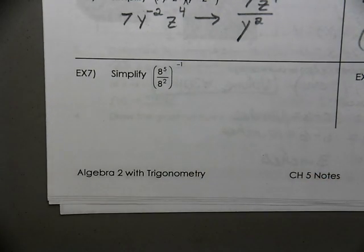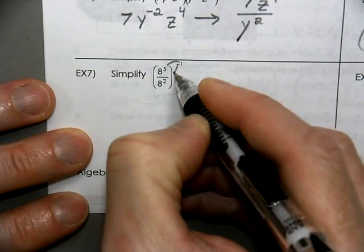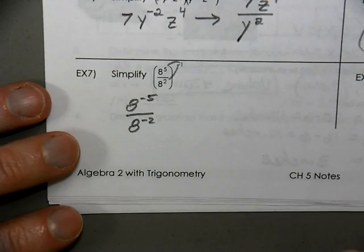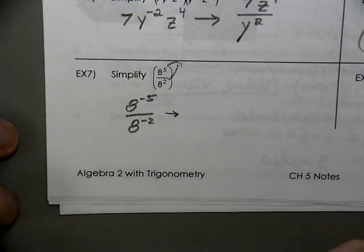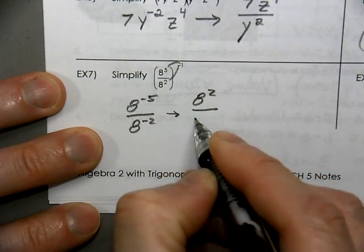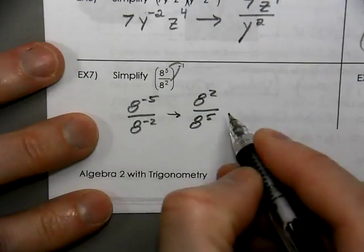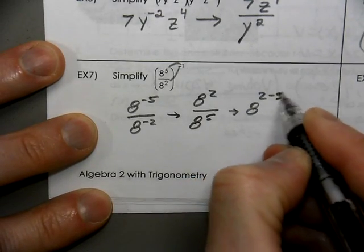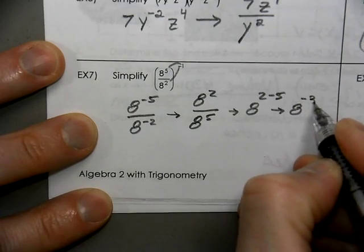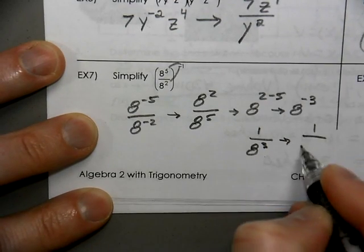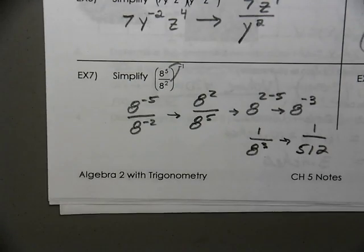What do you think here? I'm going to distribute that negative through, giving 8 to the negative 5 and 8 to the negative 2. You could do this a couple of different ways. You could think about this as 8 to the 2 minus 5, which is 8 to the negative 3, which is 1 over 8 to the third — and if you multiply that out, that's 1 over 512.